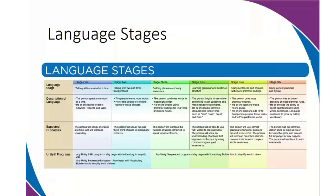The Language Lab is based on Brown's stages of language development. This chart is in your handout and can also be downloaded from the site's resource section. Brown has five stages of language development, and we on the Language Lab have six stages. We took that first stage and broke it up into two stages, because when a student is using AAC, they're not learning language any differently — they may just learn it at a slower pace.